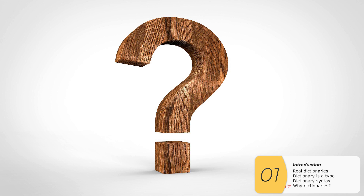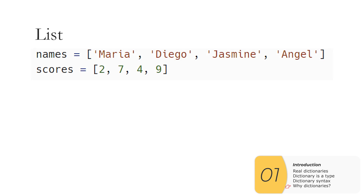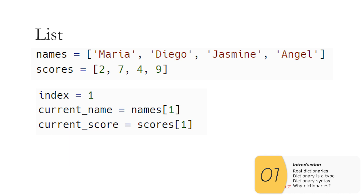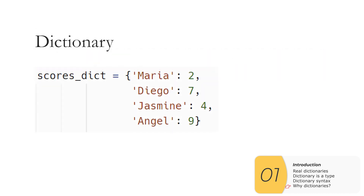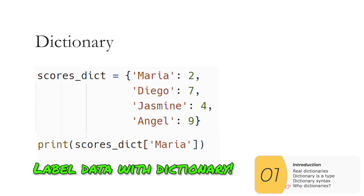So you might be wondering why we need to learn about dictionaries. Here's an example — I might have a game program where I have names and each name has a score. To do this with lists, I'd need two lists and an index. When I use a dictionary, instead of getting scores through an index, I can use a lookup of the name to get the score. This is almost like having a labeled list — I'm labeling the data in my dictionary, which in most cases is going to be easier to keep track of.